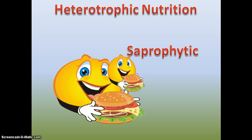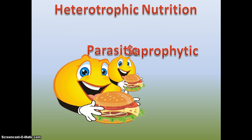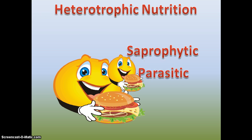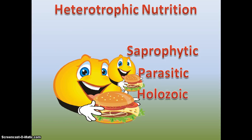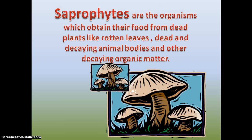Heterotrophic nutrition can be divided into three types: saprophytic nutrition, parasitic mode of nutrition, and holozoic mode of nutrition. In saprophytic mode of nutrition, an organism obtains its food from decaying organic matter of dead plants, dead animals, and rotten bread.